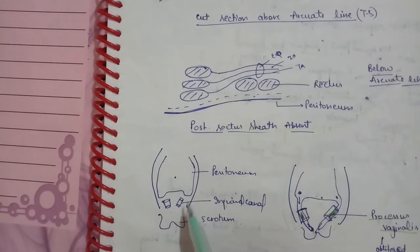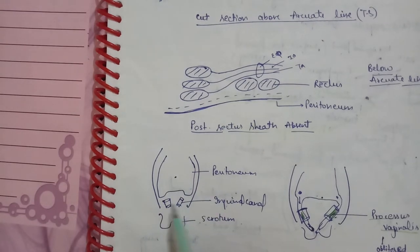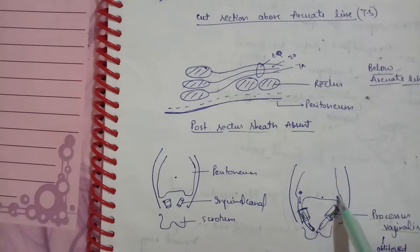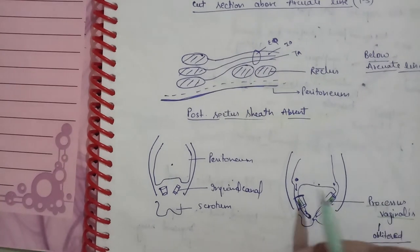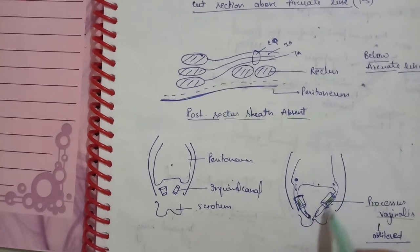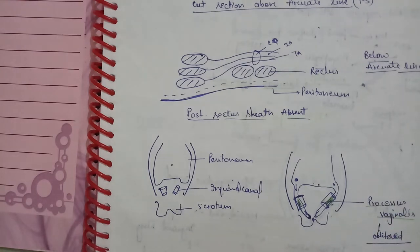In this diagram you can see the abdominal wall, peritoneum, inguinal canal, and below is the scrotum. The peritoneum invaginates through the inguinal canal. The testes pass through the inguinal wall into the scrotum. This peritoneum inside the inguinal canal is known as the processus vaginalis, and it obliterates with time.